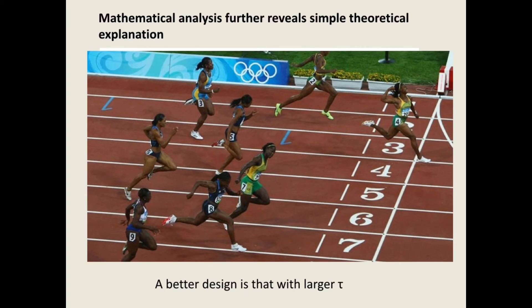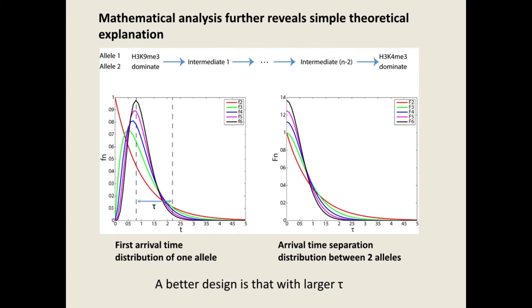To understand why the two-state barrier crossing dynamics is better than the multi-state ratchet dynamics, let's perform some mathematical analysis. For a race, let's define the difference between the arrival times of the first and second one as tau. From an engineering perspective, the larger the tau, the better the design is, since it gives more response time for the system to elicit feedback and prevent the second one from actually reaching the finishing line. Consider this set of models: two independent alleles need to transit from the initial to the final stage, with no or various numbers of intermediate states. For a fair comparison, we choose the parameters so all these models give the same mean first arrival time. One can easily calculate the first arrival time distribution and the distribution of tau. As you can see, the two-state model has a longer tail at high tau, and it's a better design.